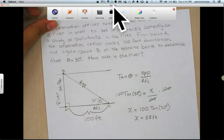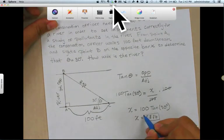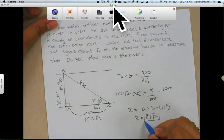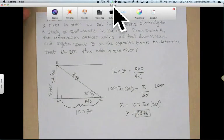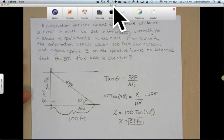So our answer to this question is that the river is approximately 58 feet wide. So hopefully another example that's simple to understand. You'll see plenty of examples of right triangle trigonometry. We see a lot of this in the real world. So it's really neat how we can use some trig functions to solve for some unknown quantities. Best of luck.